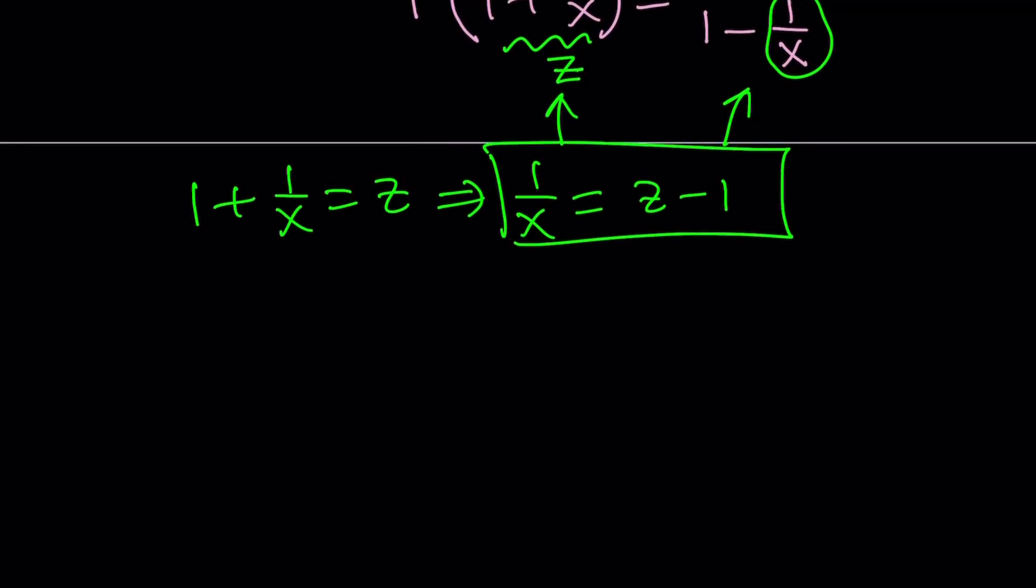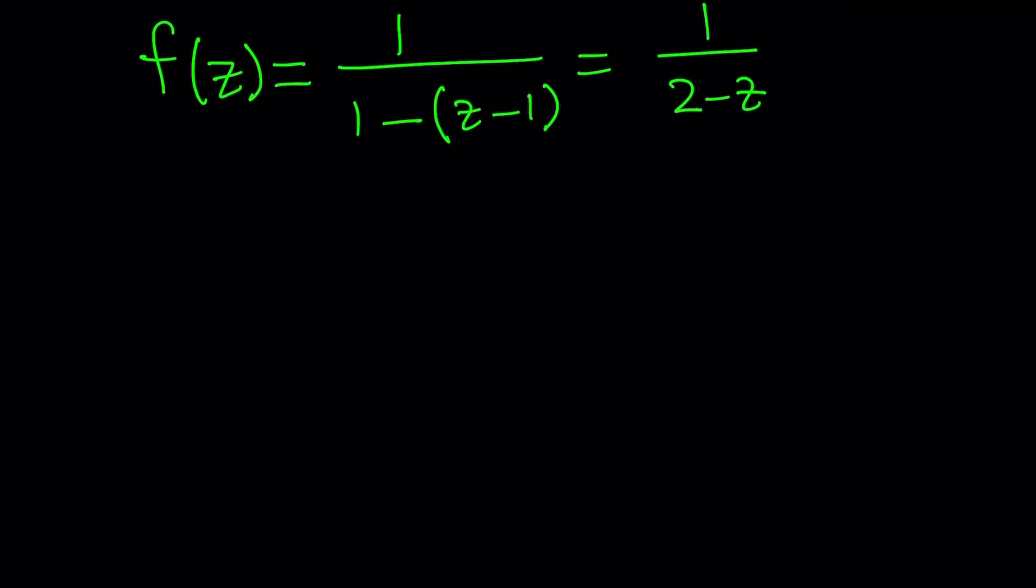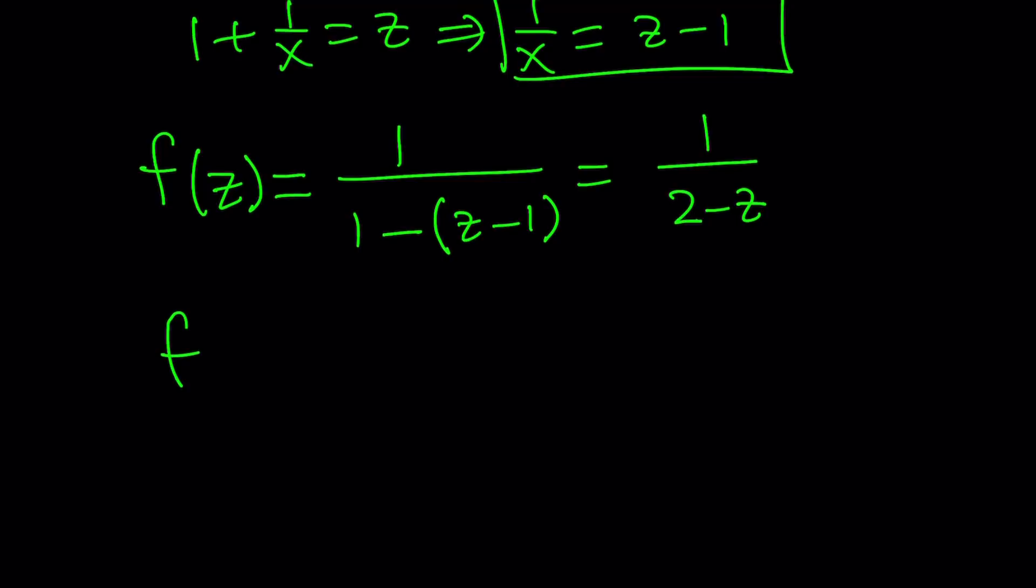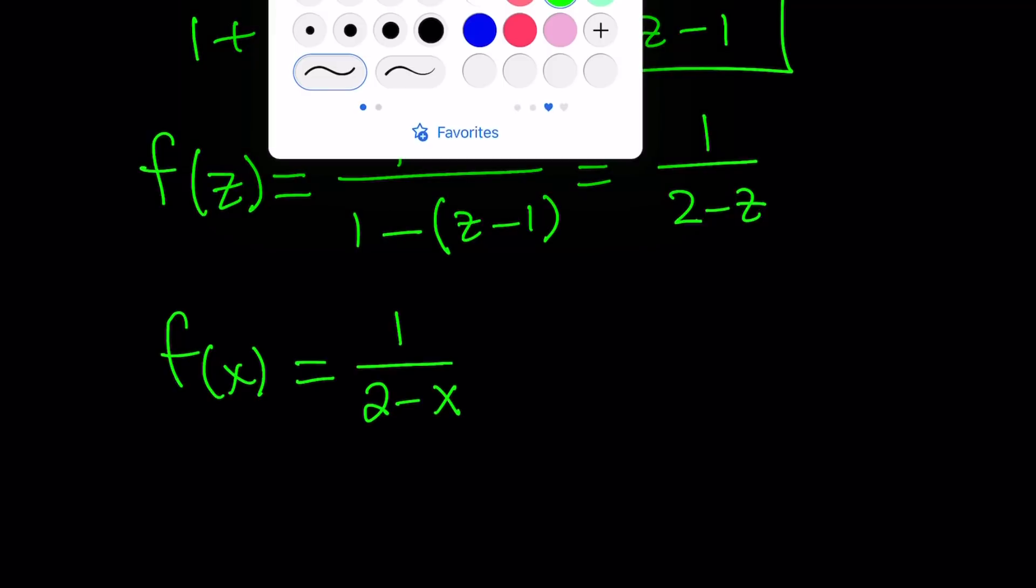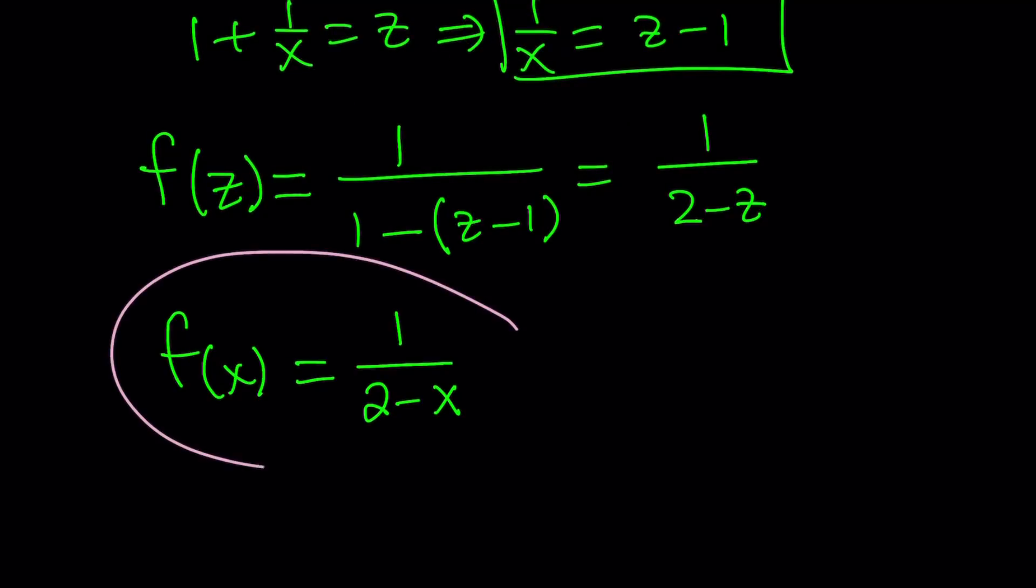Obviously the left hand side is going to give us f of z inside the parentheses. The right hand side is going to give us 1 over 1 minus, now we're going to replace 1 over x with z minus 1, but make sure to use parentheses so you don't make any mistakes. And it's going to be 1 over 2 minus z. And as before we can basically turn this into f of x by replacing the z with x. That's going to give us f of x equals 1 over 2 minus x, as before.